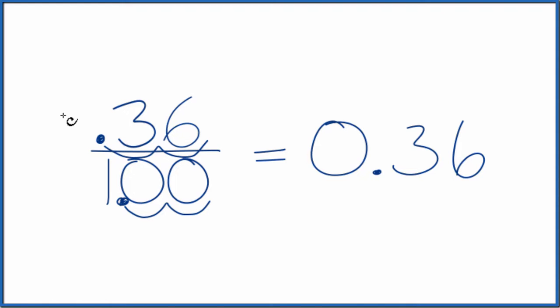You can put a zero up here if you want: 0.36, which is what we found before. So in answer to our question, 36 one hundredths as a fraction equals the decimal 0.36. This is Dr. B, thanks for watching.